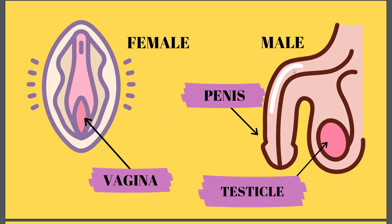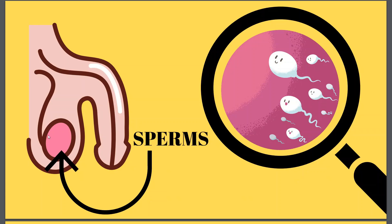So here we have the vagina in females and the penis and testicle in males. Now, inside the male testicle there are small tadpole-like things known as sperms. If you zoom in and take a look inside the testicle, there are these small tadpole-like things swimming around known as sperms, and they play a very important part in helping create a baby. Let's see how these sperms enter the woman's body.